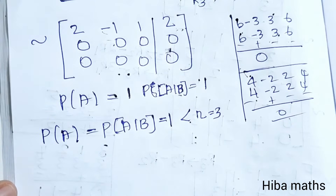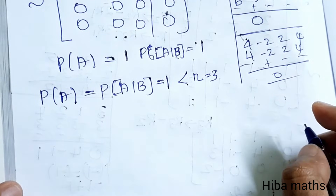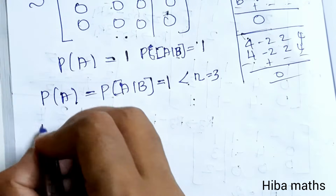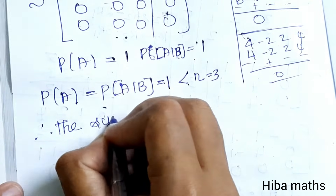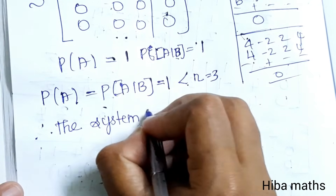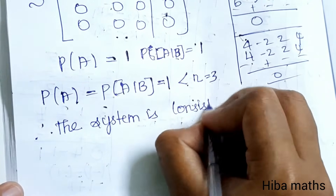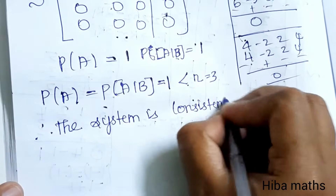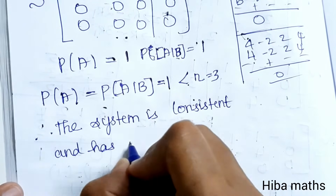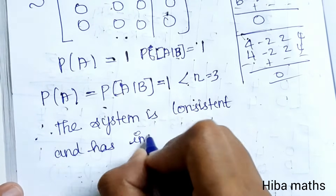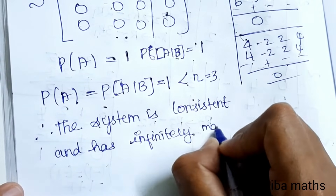Since rank of A equals rank of the augmented matrix equals 1, which is less than n equals 3, the system is consistent and has infinitely many solutions.